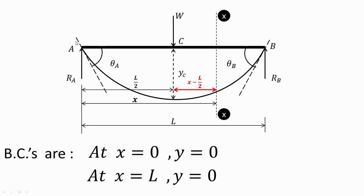From point A, draw a tangent to this elastic curve. Similarly from point B, also draw a tangent to the elastic curve. The angle made between the tangent and the beam is theta A. Here also, between the tangent and the beam, is theta B. So theta A and theta B are the slopes at point A and point B respectively.